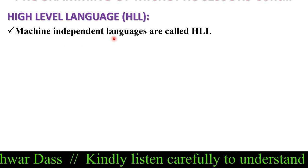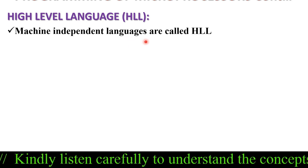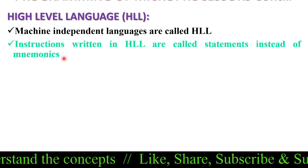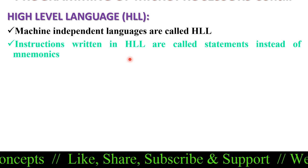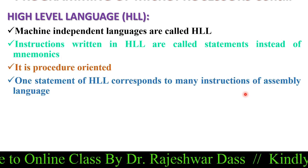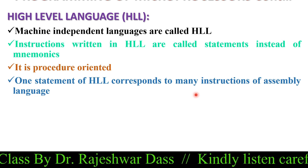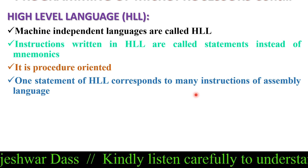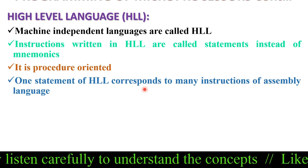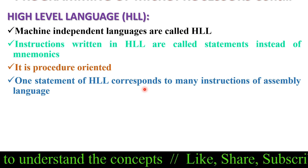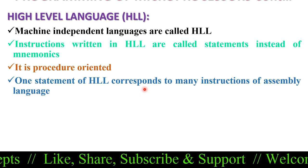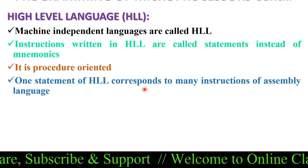High level languages are basically machine independent languages, which is why they are called high level languages, while machine-dependent languages are known as low level languages. Instructions written in high level languages are called statements instead of mnemonics. It is procedure oriented, and one statement of a high level language corresponds to many instructions of assembly language — meaning many operations can be expressed within a single statement.